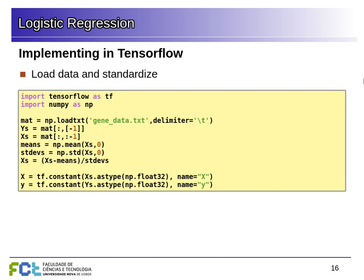Now we create two TensorFlow constants with these values — one constant for the features and another for the labels. We'll see later how to do this with more sophistication using placeholders, where we can feed in data during computation. For now, to simplify things, we'll put the data as constants. This tells TensorFlow that these are not parameters to change — this is the actual data we're using.